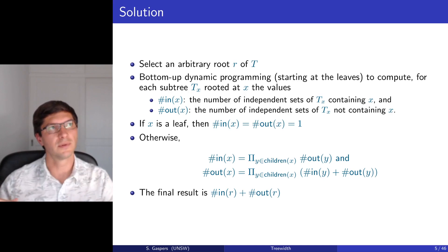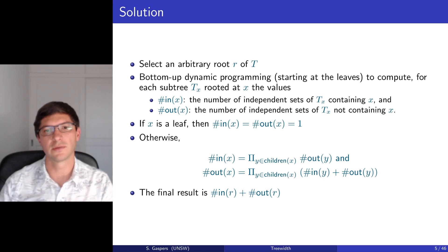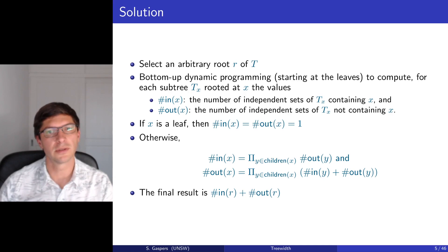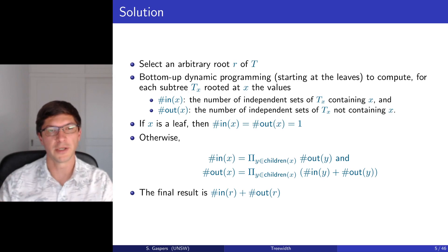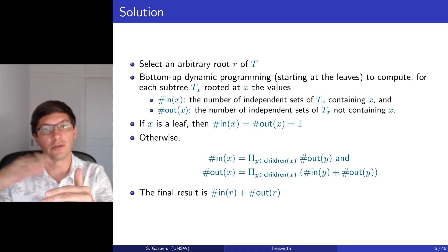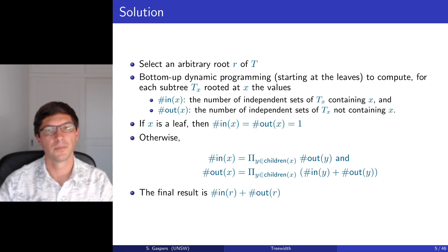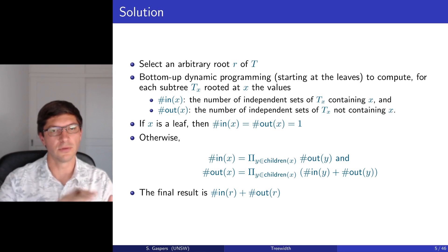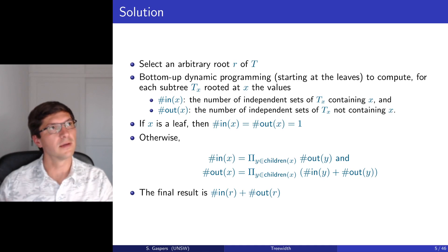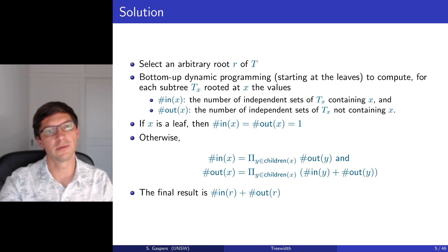This bottom-up dynamic programming works nicely for trees because as soon as we know the information about the children of a vertex, we can compute the information for the parent node without looking further down. Once we've computed information about the parent, we can forget everything about the children. We never have to look far away, and we never need to store more than local information.